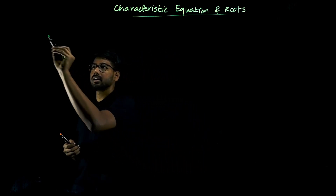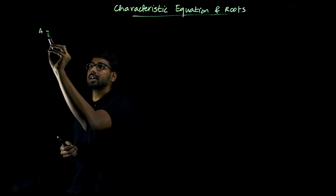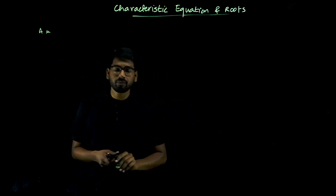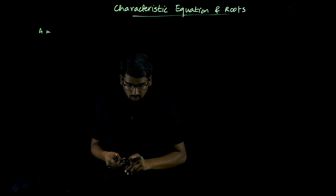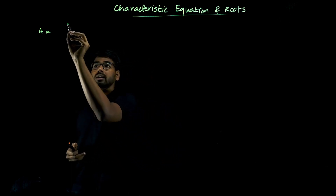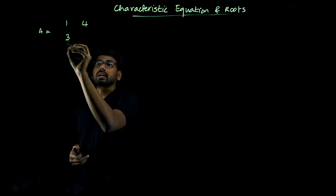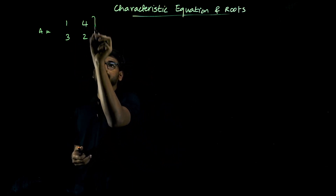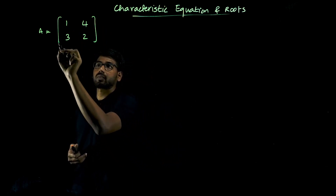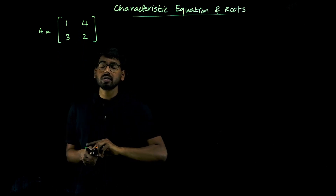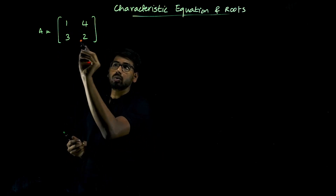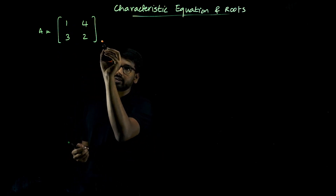Given matrix A is equal to [[1, 4], [3, 2]]. It is a 2×2 matrix.